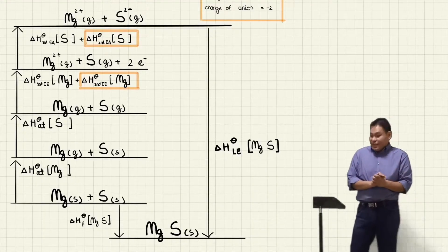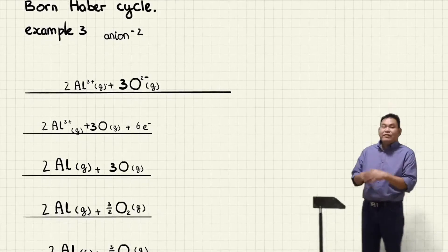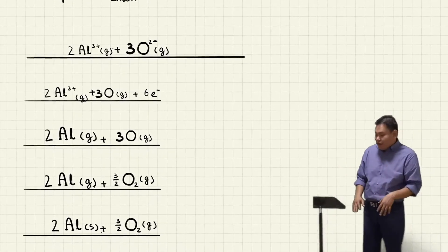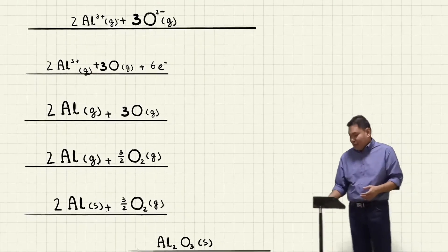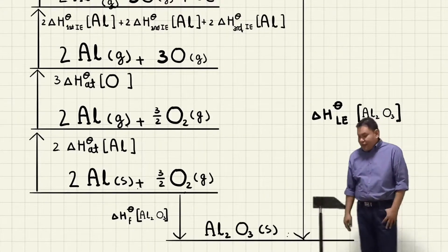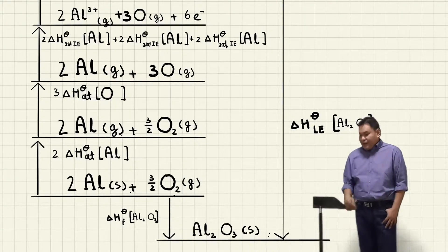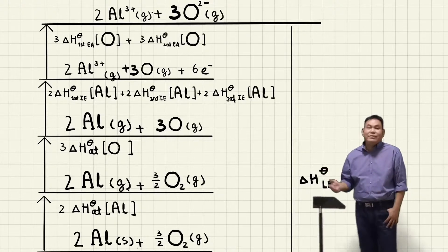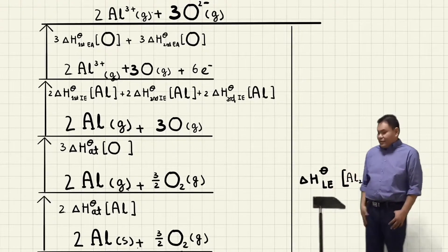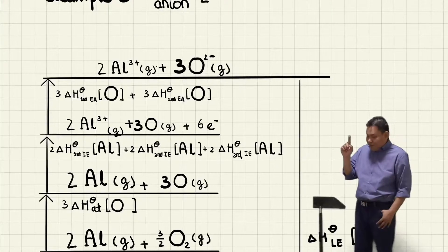Now we do Example 3: aluminium oxide Al2O3. We already wrote down all the substances into the horizontal lines and now we draw the arrows for enthalpy changes, starting from the elements in standard state going upward. We have two times delta H atomization of aluminium (multiplied by two because there are two Al) and three times delta H atomization of oxygen. Then the first, second, and third ionization energy of aluminium.